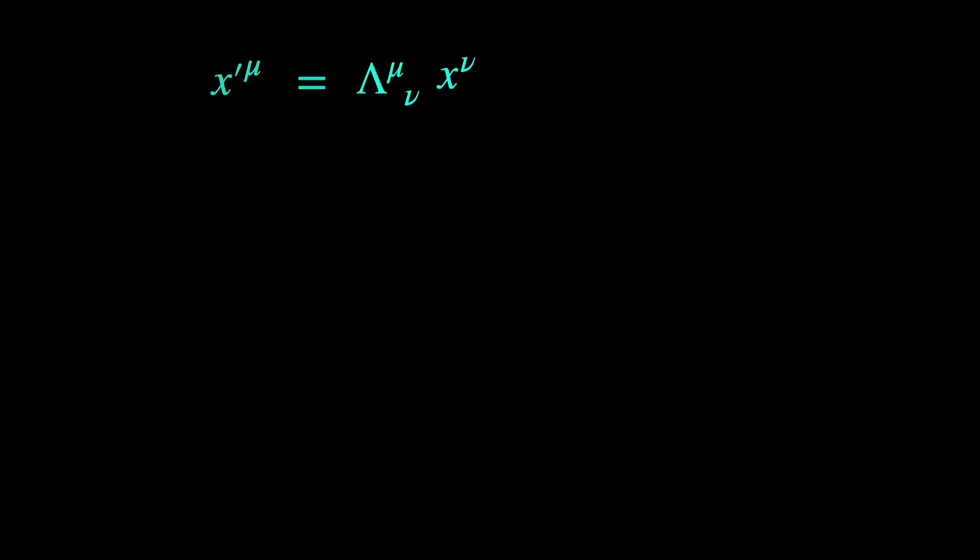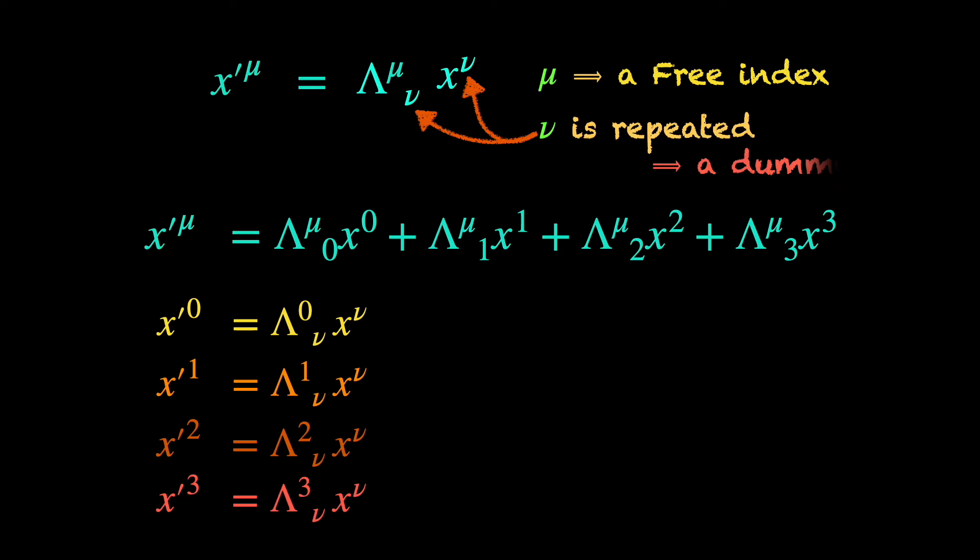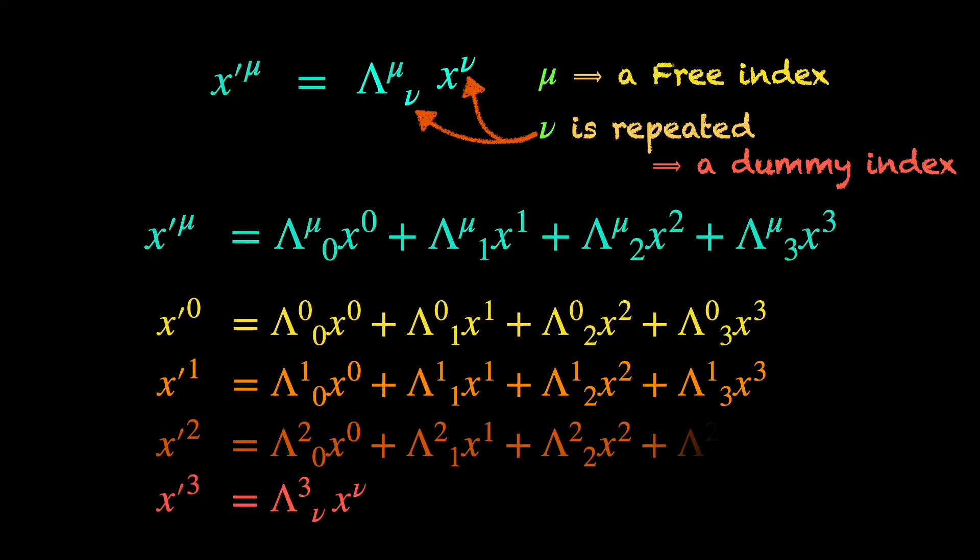The index mu appearing once in the left hand side and then again in the right hand side is called a free index because it is free to have one equation for each of its four values. The other index nu appears only on the right hand side and is repeated once as a subscript index of lambda and then as a superscript index of x. This repetition indicates multiplying terms with the same nu value and then summing them all over the nu value. Nu is called a dummy index because it doesn't get an equation for each of its values, instead they get summed over. So the free index tracks individual equations, dummy index tracks different terms of the same equation.